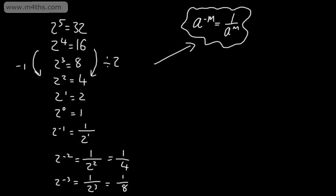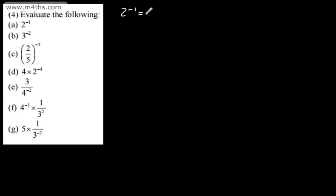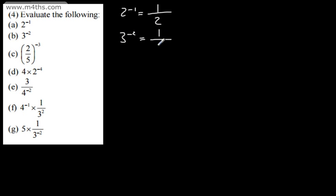So let's go ahead and look at using that particular rule. 2 to the power of negative 1 is equal to 1 over 2 to the power of positive 1. Generally speaking, I don't need to write a 1 here — it would be perfectly fine to give the answer as 1 over 2. 3 to the negative 2 is going to be 1 over 3 to the positive 2, using the rule a to the negative m is equal to 1 over a to the positive m. 3 squared is 9, so the answer is 1 over 9.